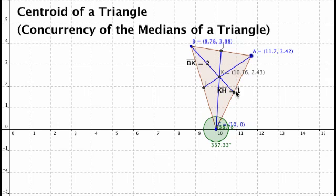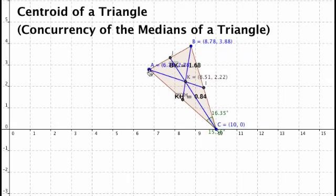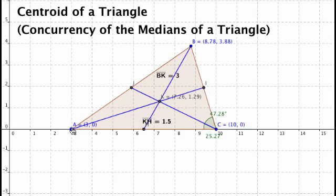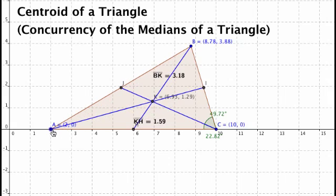The next property of the centroid is that the coordinates of the centroid happen to be the average of the coordinates of the vertices.